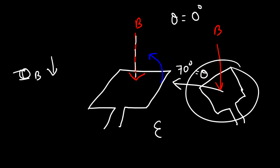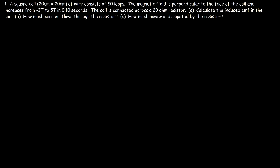Those are the three ways to generate an induced current in a coil: you can change the magnetic field — increase it or decrease it; you can change the area of the coil by stretching or compressing it; or you can change the angle between the magnetic field and the normal line. If you change the angle, the flux changes and there will be an induced EMF in the coil.